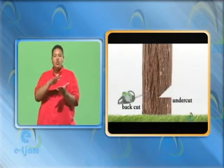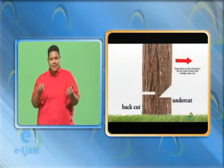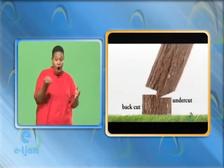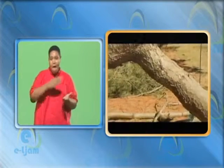Then, a back cut is performed on the opposite side of the undercut. As soon as the tree is felled, the branches, crowned branches and leaves, and the root are cut off, leaving the trunk, which is most suitable for furniture construction.